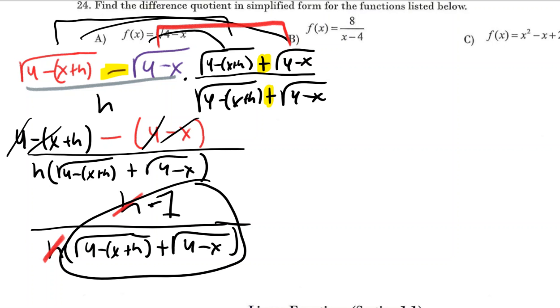For parts B and C, difference quotient still the same, applying the difference quotient still the same. It's just that you're not going to multiply by conjugate to simplify those - you simplify differently. But for this type, this is what you do.